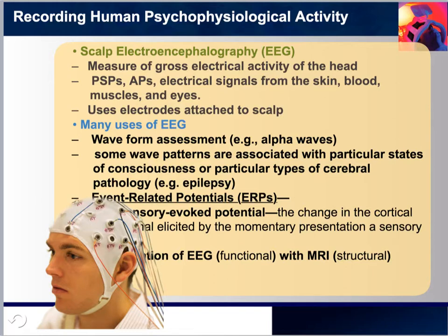For example, alpha waves are regular 8 to 12 per second, high amplitude waves associated with relaxed wakefulness. Because EEG signals decrease in amplitude as they spread from their source, a comparison of signals recorded from various sites on the scalp can sometimes indicate the origin of particular waves. This is why it is usual to record EEG activity from many sites simultaneously.